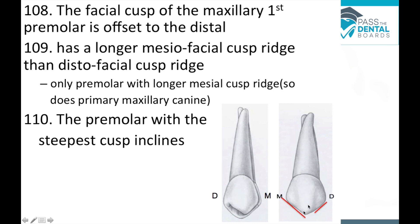The facial cusp tip of the maxillary first premolar is offset to the distal, which is unique because it's actually the opposite in most other teeth. Because the cusp tip is offset to the distal, the distal cusp ridge is going to be shorter than the mesial cusp ridge. Take note that this is the same for the maxillary canine in baby teeth — so make sure you know that for the maxillary first premolar and the primary maxillary canine.